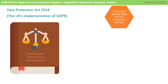The first principle is fair, lawful and transparent processing. Personal data must be processed lawfully, fairly and in a transparent manner in relation to the data subject. This means that all data controllers must only process data for the purpose they acquired it, and with consideration of the data subject's rights.